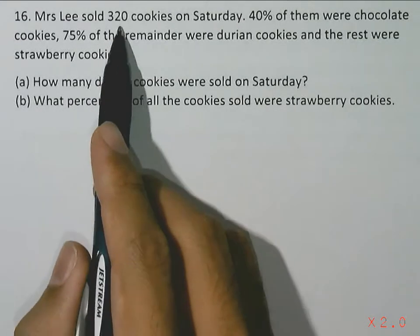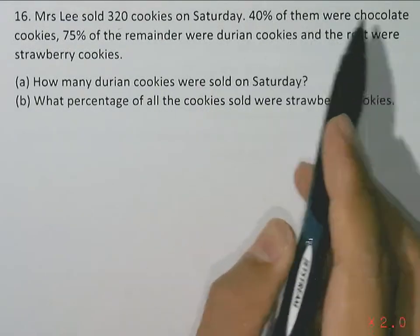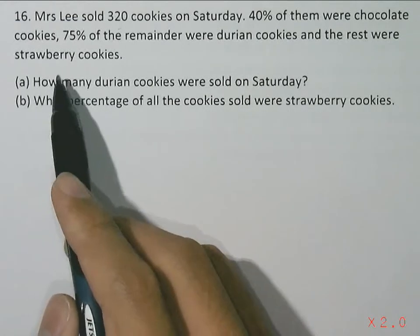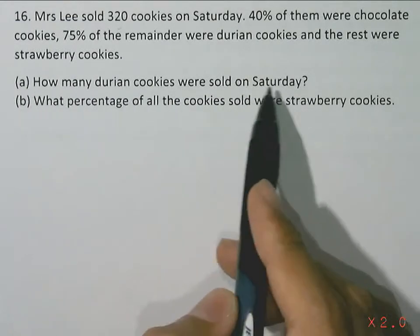So Mrs. Lee sold 320 cookies on Saturday. 40% of them were chocolate cookies and 75% of the remainder were durian cookies and the rest were strawberry cookies. So part A, how many durian cookies were sold on Saturday?